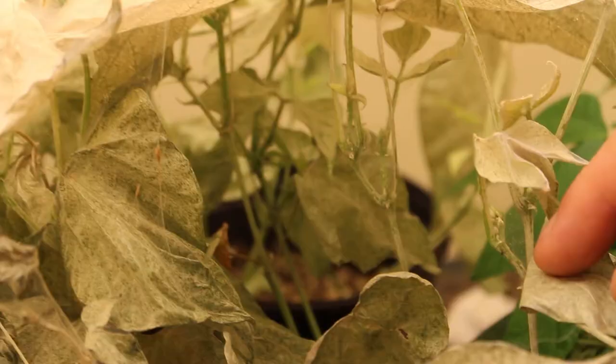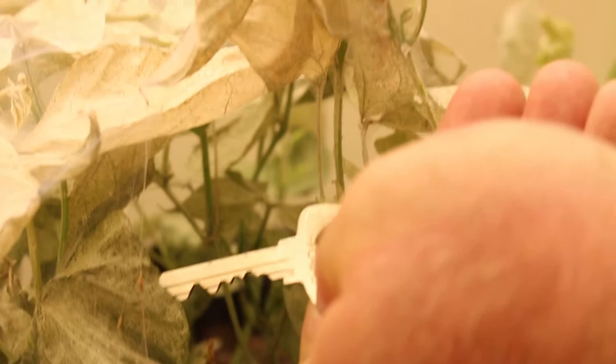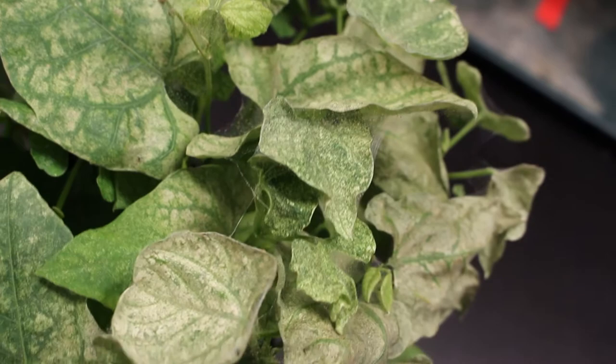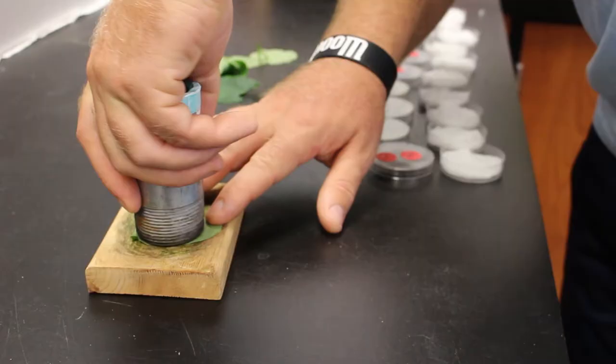So what we're working on here is screening populations, and we set up our leaf disc assays using bean leaves that we've grown in our greenhouses here. At the moment, I'm evaluating the susceptibility of one of our known susceptible colonies to a series of miticides.